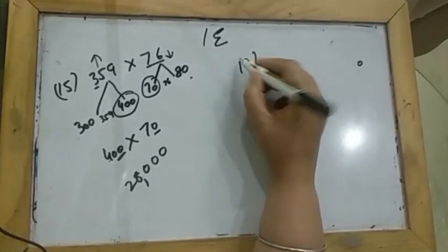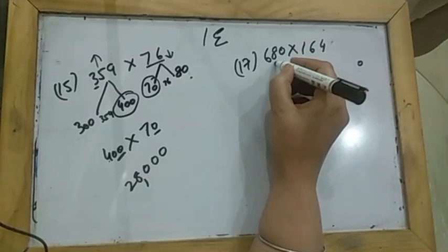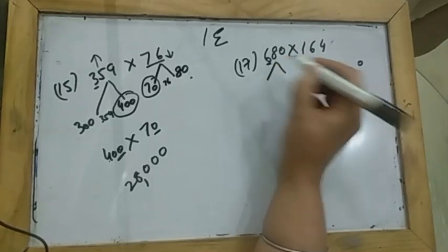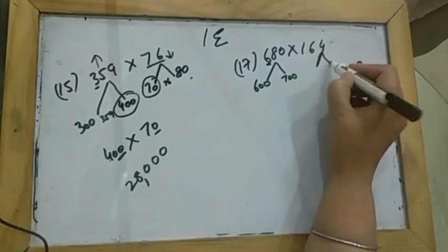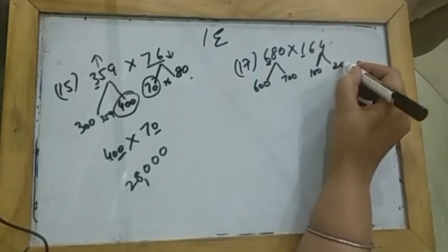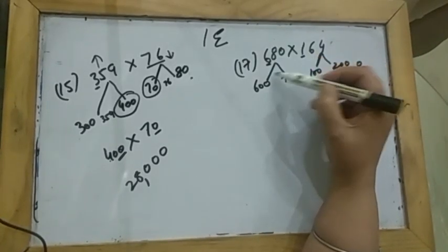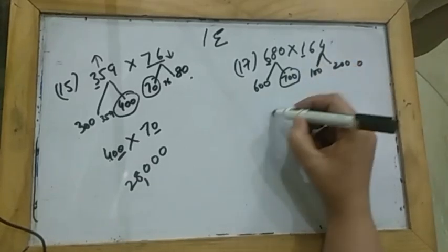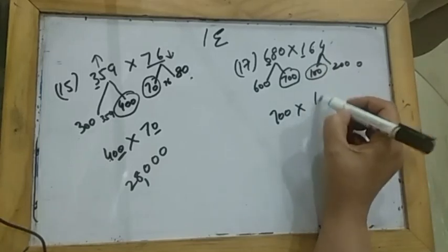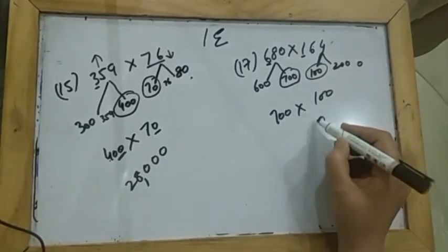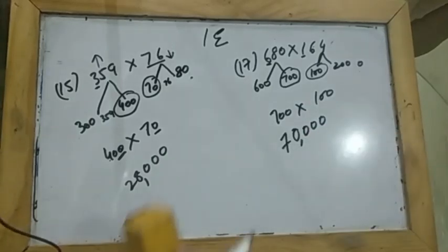Now the 17th question: 680 multiplied by 164. The number 680 lies between 600 and 700, and 164 lies between 100 and 200. Rounding the first number upward gives 700, and rounding the second number downward gives 100. When you multiply them, you get 70,000.